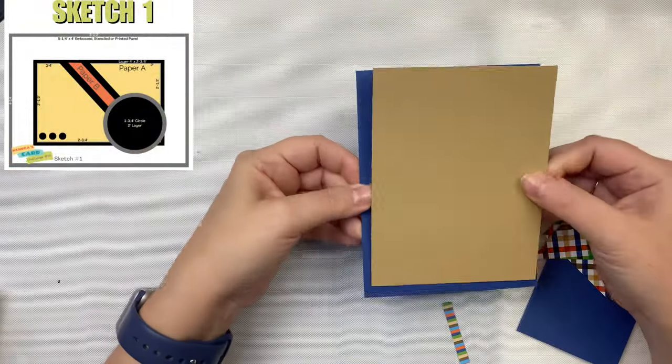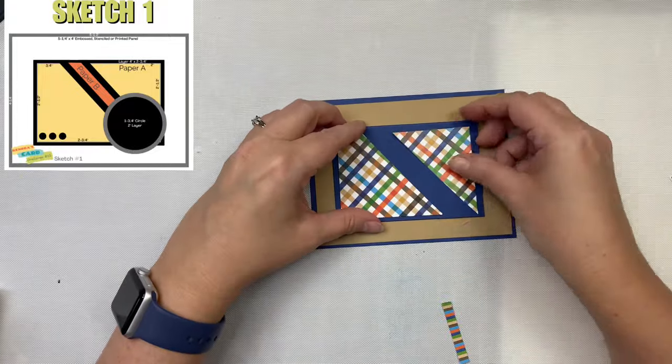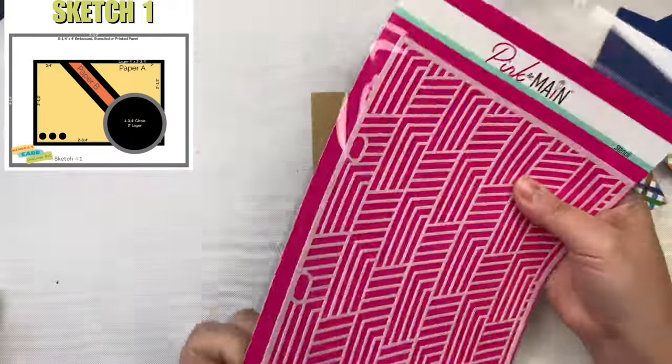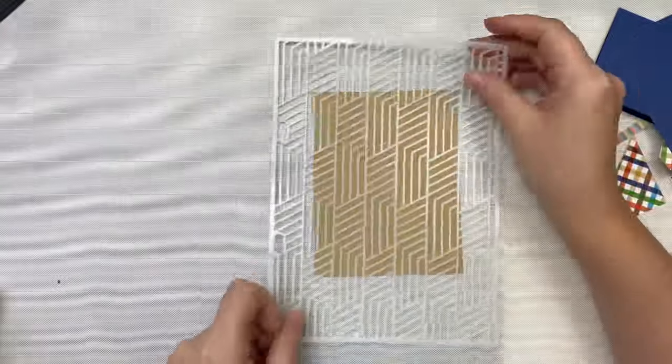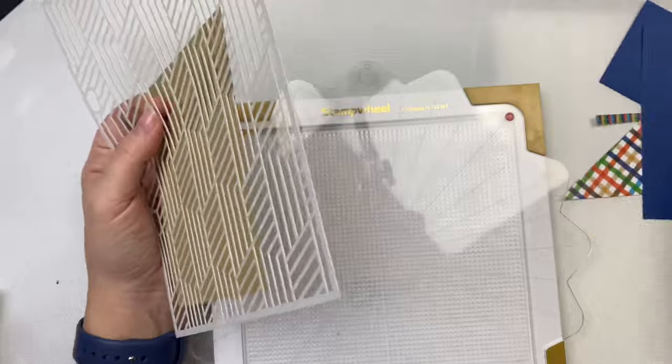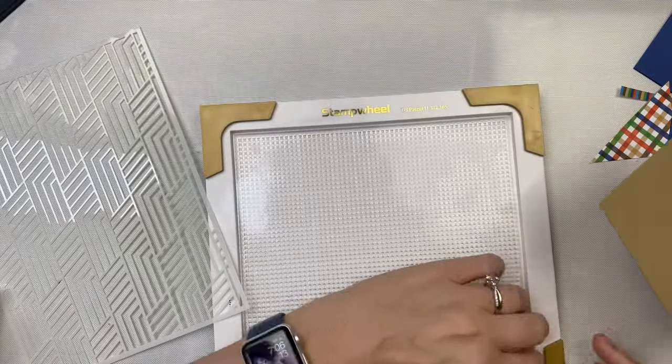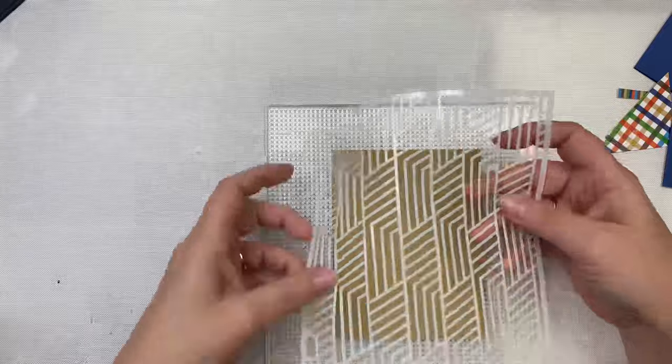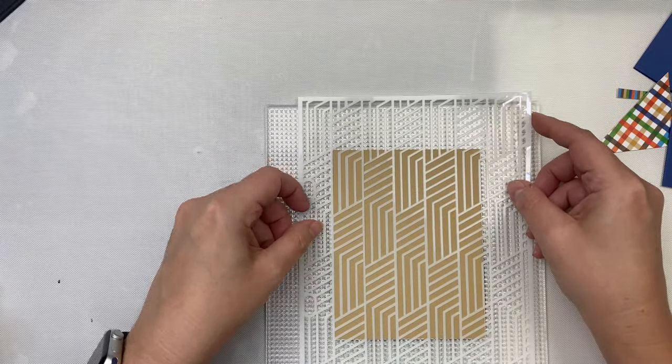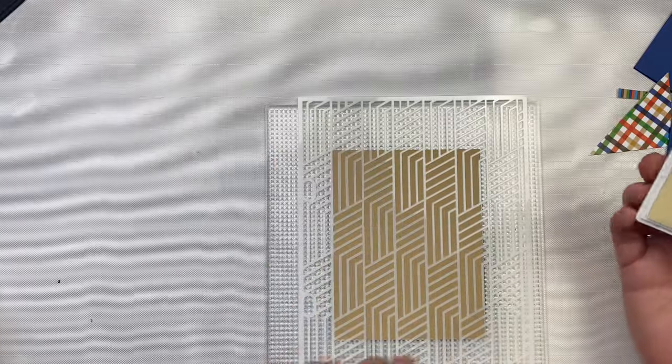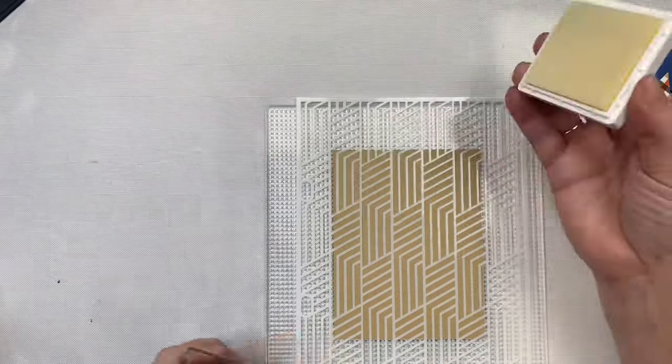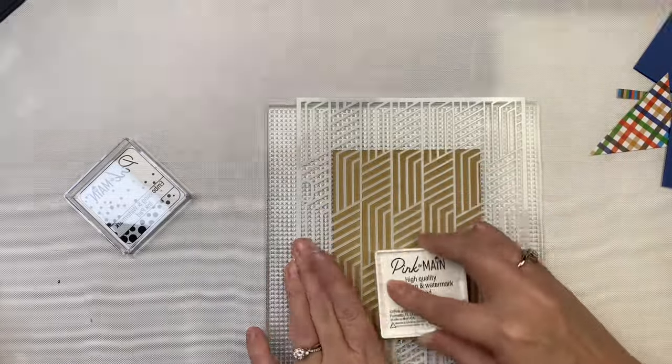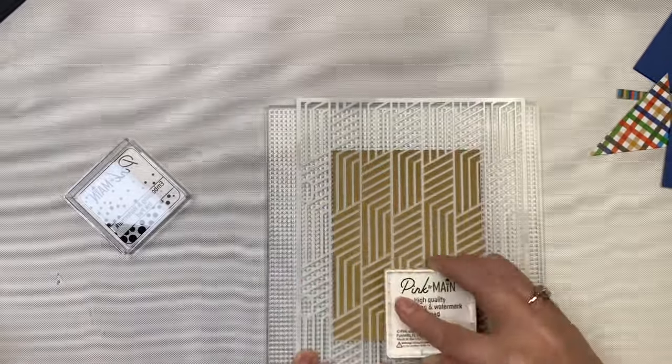For this first one, I have a 4 and a quarter by 5 and a half inch panel in the Barbershop blue cardstock and a 4 by 5 and a quarter inch panel in the tan brownstone color. This fun fold will have a smaller card on top of these two panels. I decided to use the stencil from the kit, and I'm using some Pink and Main embossing and watermark ink, applying it directly on top of the stencil onto the tan card panel. I'm using the sticky part of the insert piece of my stamp wheel to hold the panel in place and to also hold the stencil.